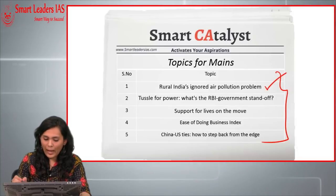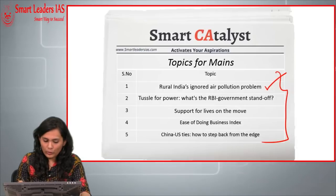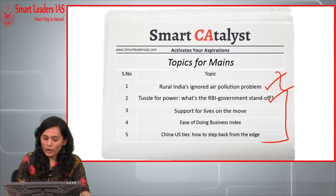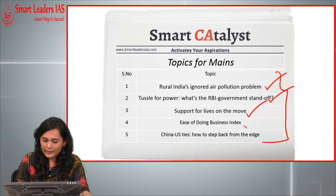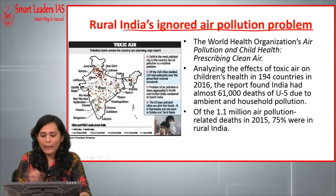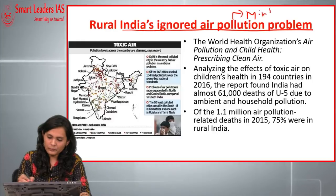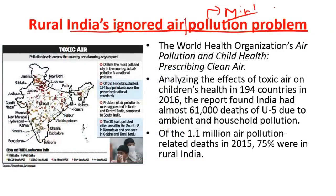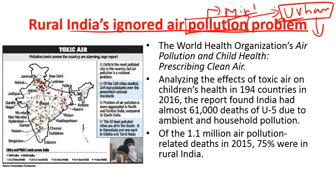Now we'll see articles related to mains — five topics: rural air pollution in India, the power tussle between RBI and the government of India, the issue of migration, the World Bank's Ease of Doing Business Index, and China-US ties. The first mains article is about rural India's ignored air pollution problem, taken from Mint. While awareness about pollution has increased, most surveys and media campaigns talk only about urban air pollution. The World Health Organization has released a report titled 'Air Pollution and Child Health: Prescribing Clean Air,' which throws light on rural air pollution.